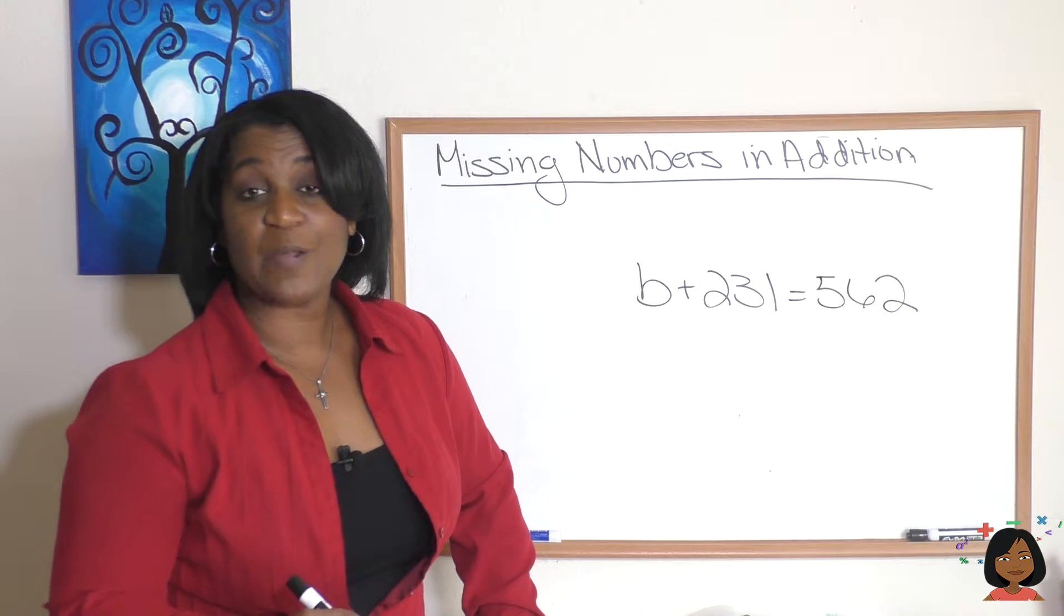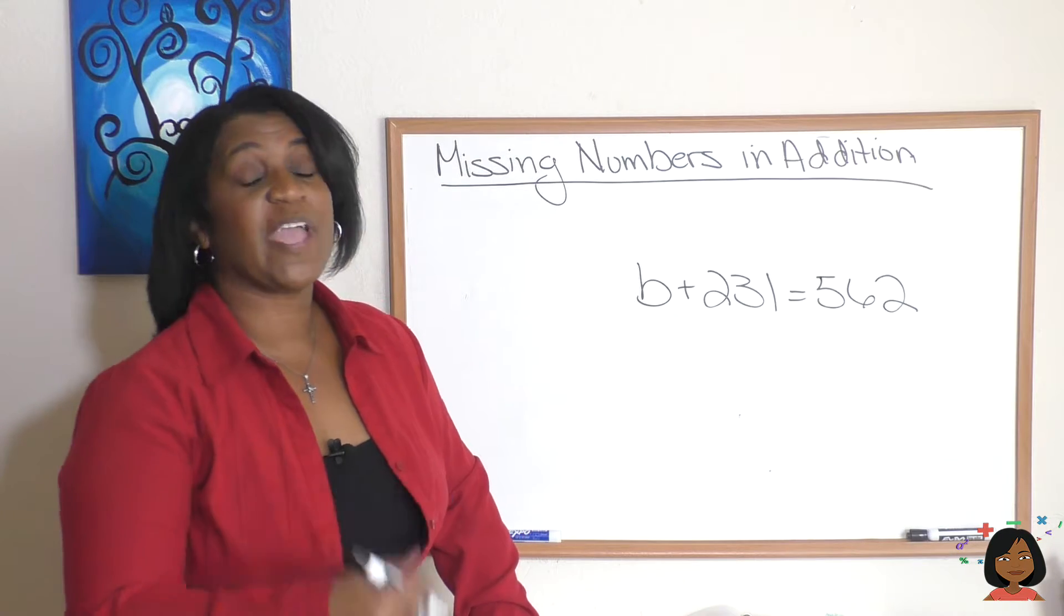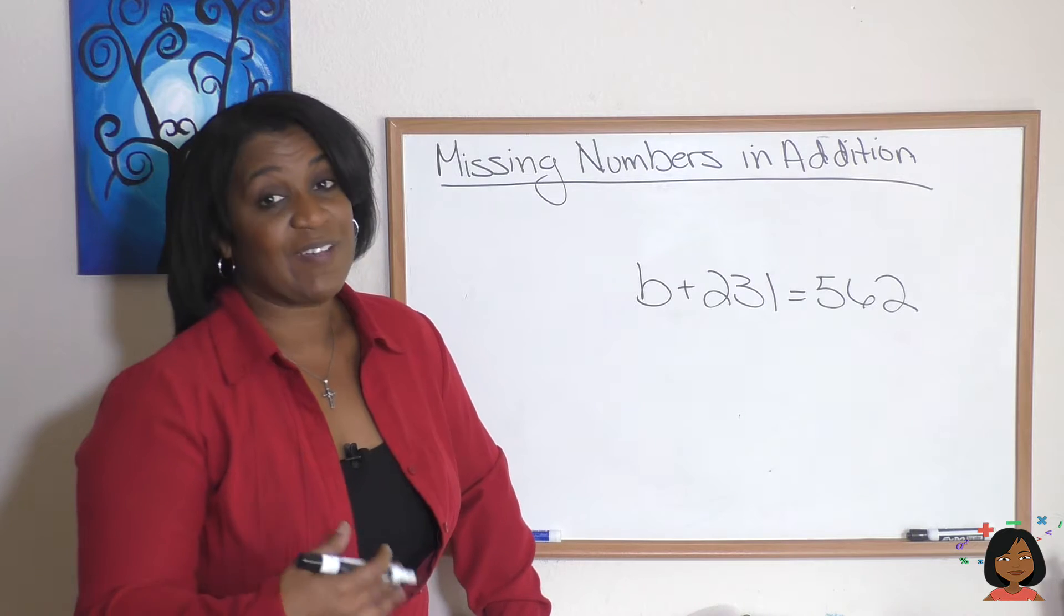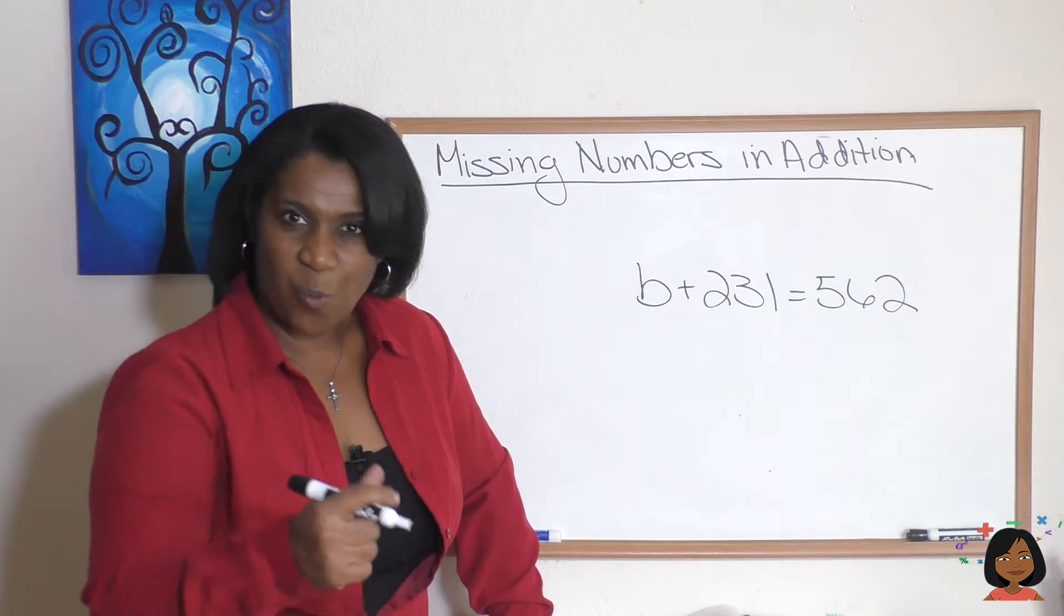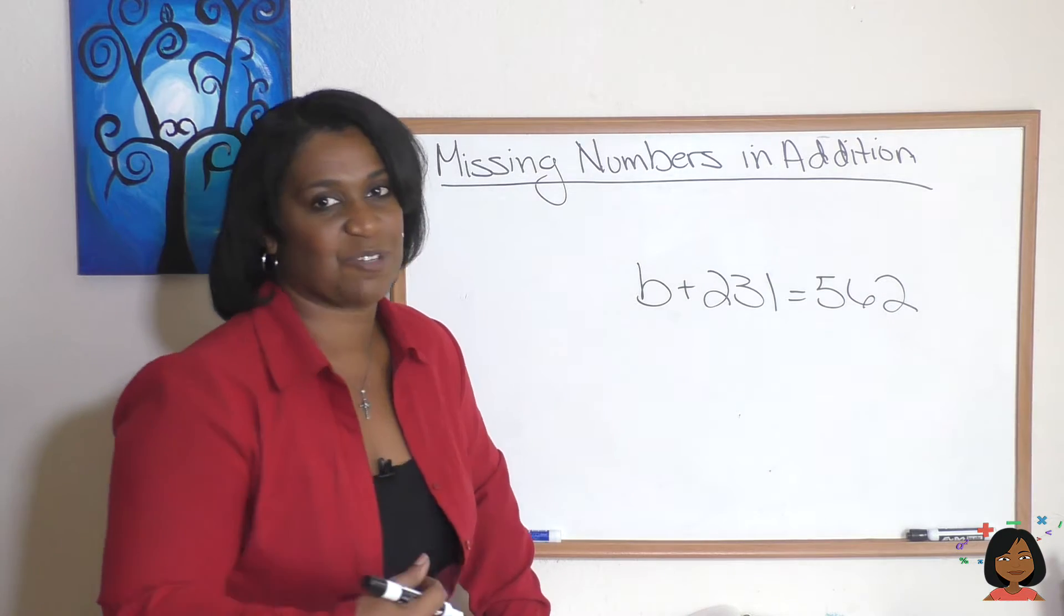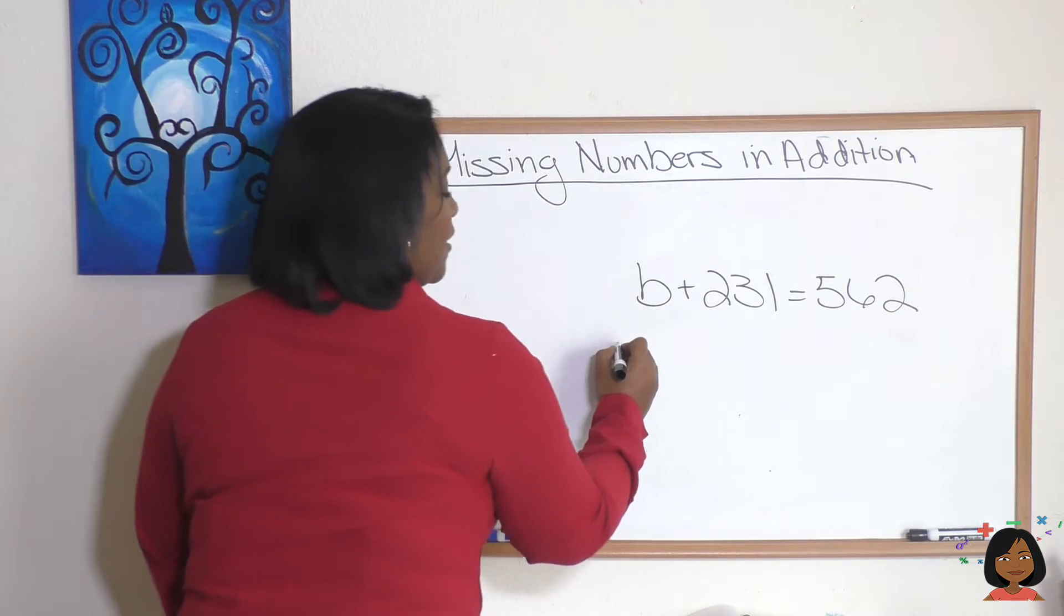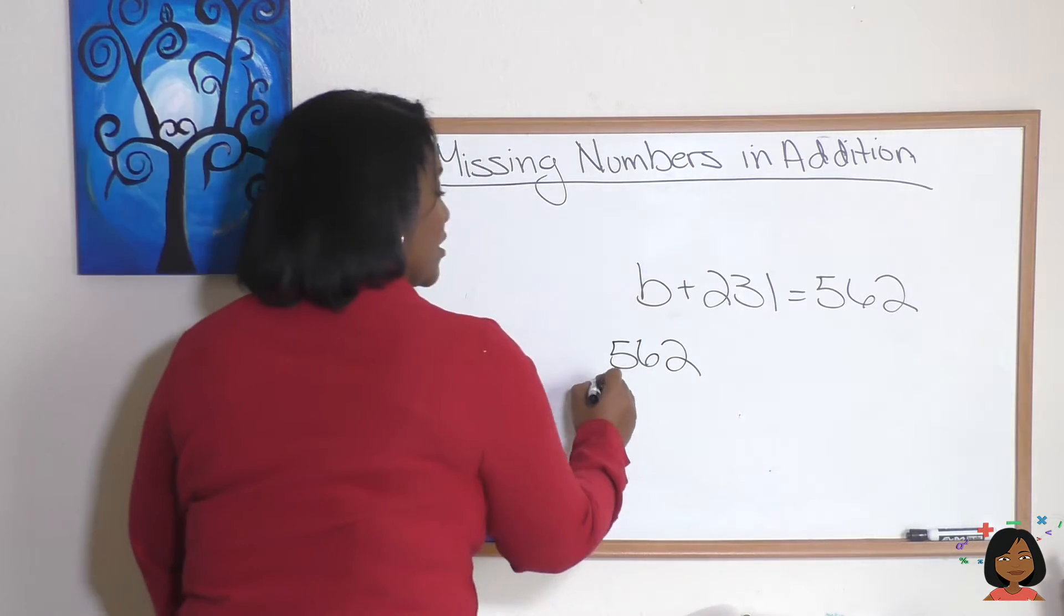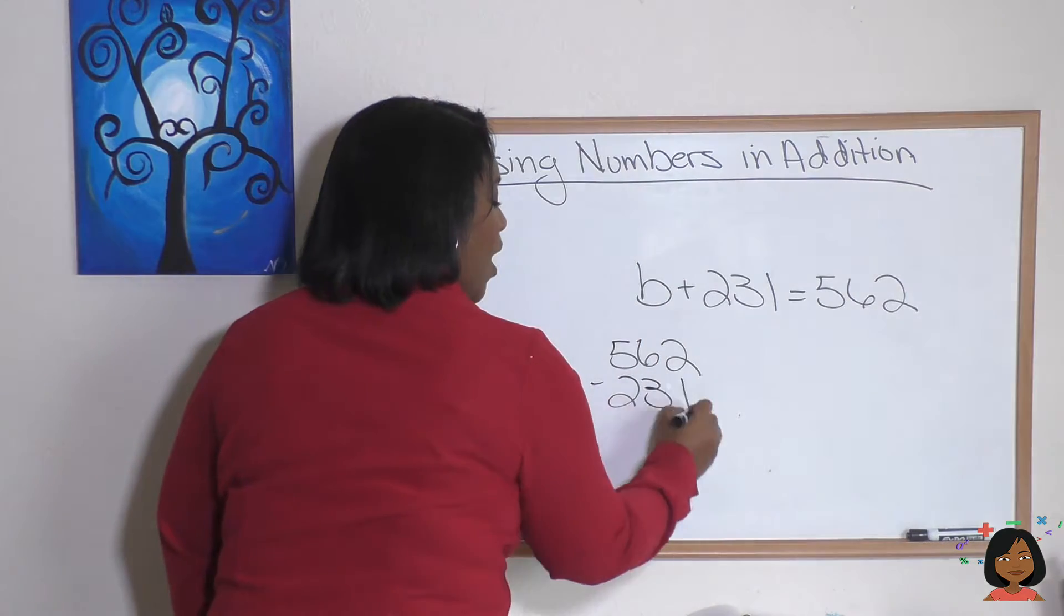Let's try it again with some bigger numbers. So here we have B, our missing number, plus 231 equals 562. So what's the rule for addition? Do the opposite. Let's subtract. Here we go. 562. We're going to take our bigger number here. We're going to subtract 231.